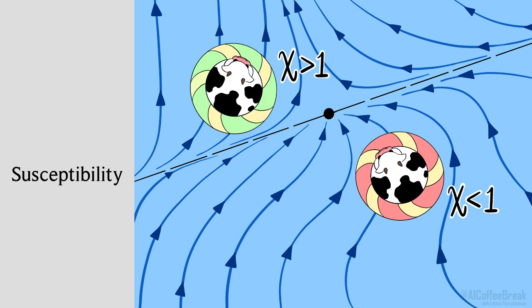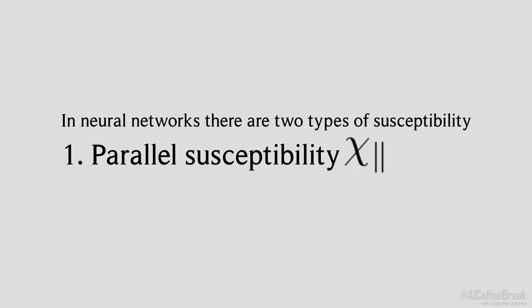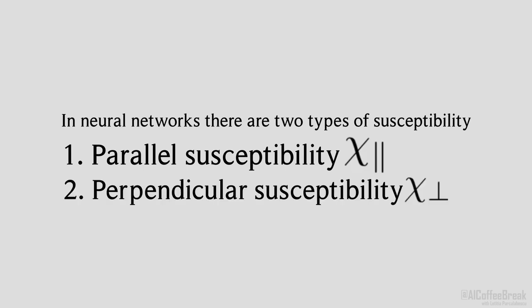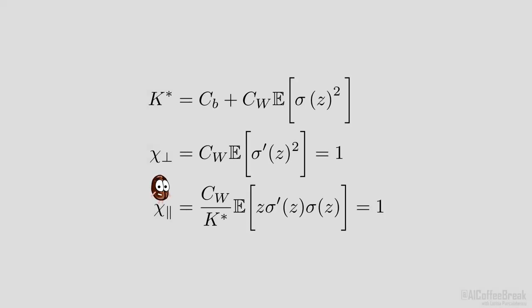For neural networks, since we're working with higher dimensional vectors, the deviation from the fixed point can be both in the direction of the data, or in parallel and perpendicular to the data. This means we have two types of susceptibility, rather than one. The first quantity is called the parallel susceptibility, obviously. And the second one is the perpendicular susceptibility, also obviously. To get a bit of intuition, the first corresponds to the difference in magnitude between two nearby inputs as they pass through the network. And the latter corresponds to their relative distance, but also controls vanishing and exploding gradients.